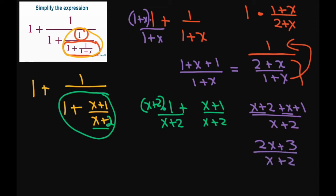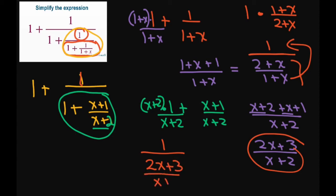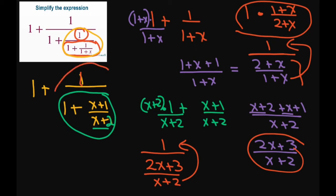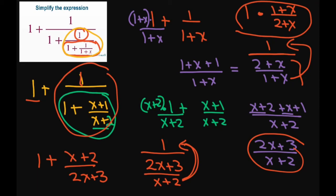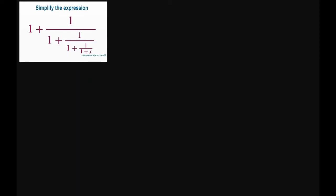Now again, this is all under 1. So basically we have 1 divided by 2x plus 3 divided by x plus 2. Using the same keep-change-flip procedure, I'm going to move this up. So all of this is just going to be 1 plus x plus 2 divided by 2x plus 3.